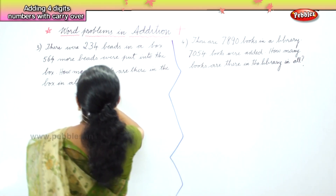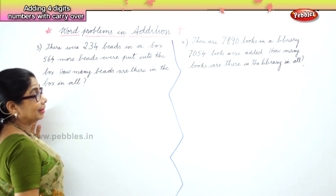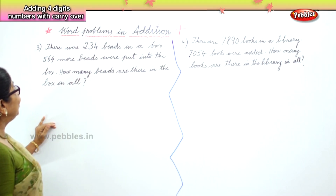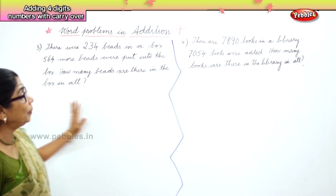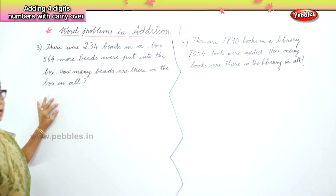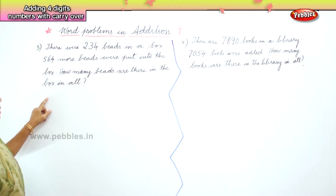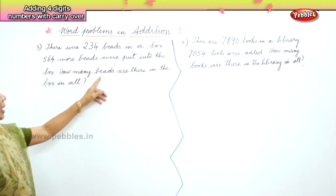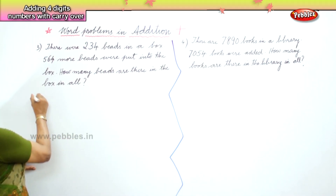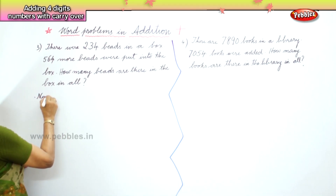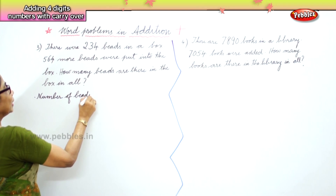Now here are your two problems. First let's look at problem three before we go to problem four. There were two hundred and thirty four beads in a box, five hundred and sixty four beads were put into the box — how many beads are there in the box in all? The first statement is: number of beads in a box.